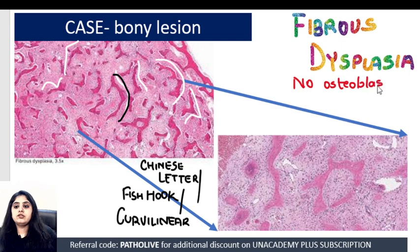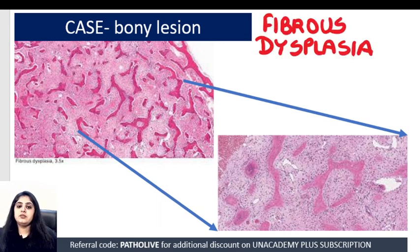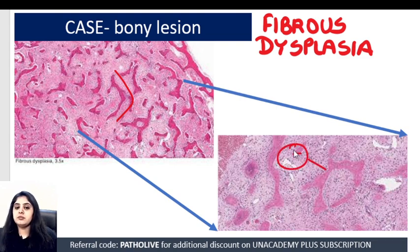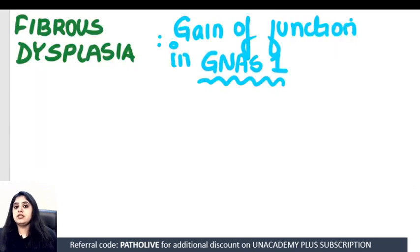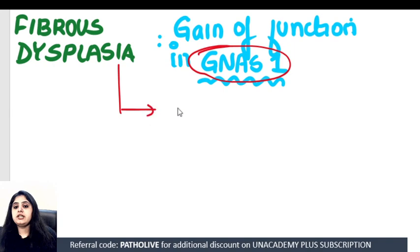There is no osteoblastic rimming noted. Please remember: first, the Chinese letter pattern; secondly, there is no osteoblastic rimming — that is fibrous dysplasia. If someone asks about the genetic alteration, it is associated with GNAS mutations. Now I'm giving you a little homework: you need to tell me two syndromes with which fibrous dysplasia can be seen.